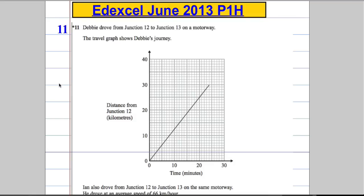Right, so question 11. Notice the little star here - that's a QWC, which means they're testing the quality of our written communication. So let's make sure that we explain things clearly. Debbie drove from Junction 12 to Junction 13 on a motorway.